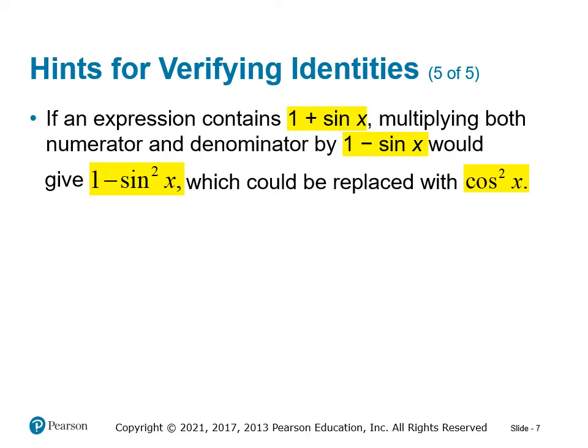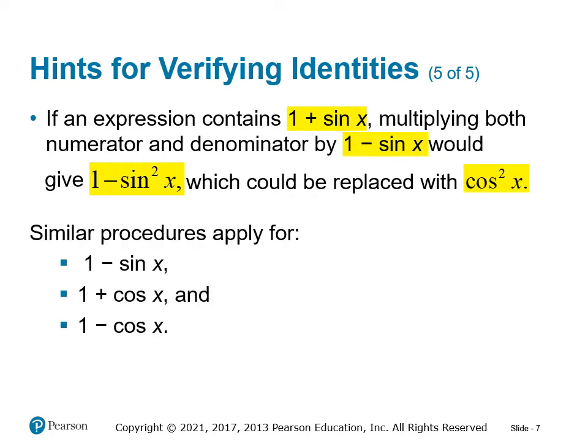Another common algebraic technique is using complex conjugates. If an expression contains one plus sine x, multiplying both the numerator and denominator by its conjugate, one minus sine x, gives one minus sine squared x in the denominator, which can be replaced with cosine squared x. Similar procedures apply for one minus sine x, one plus cosine x, and one minus cosine x. If you see one of these forms, this is a useful strategy to manipulate one side of the equation to match the other.